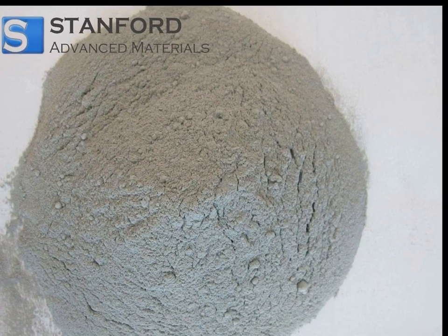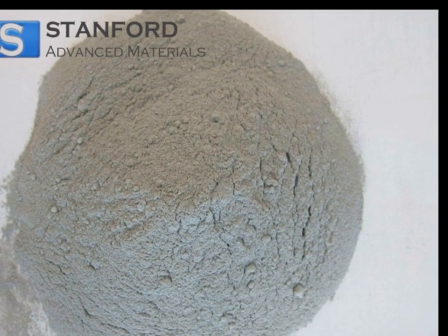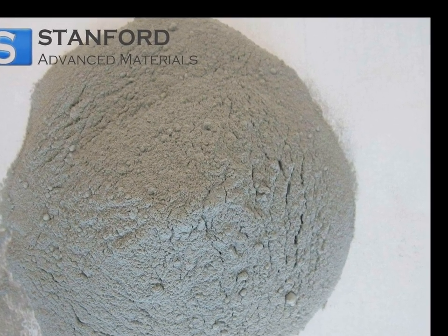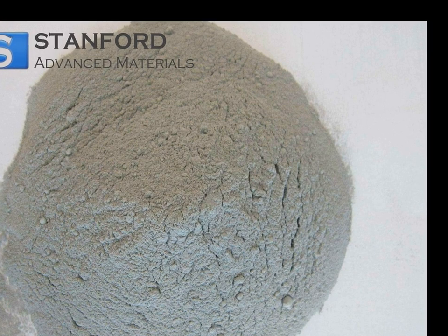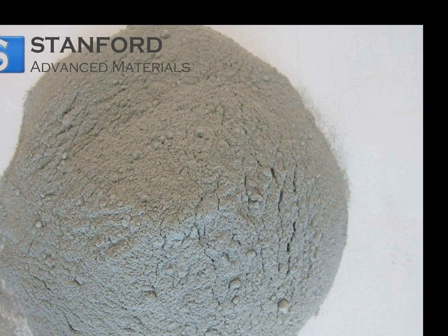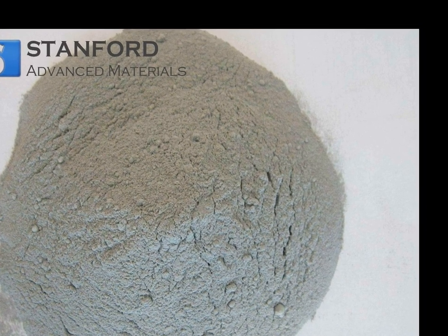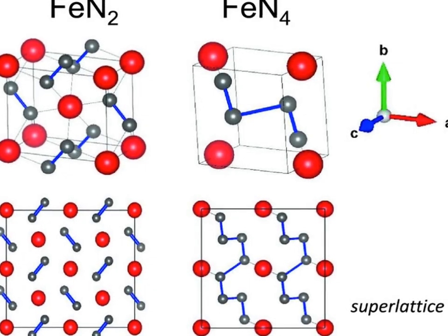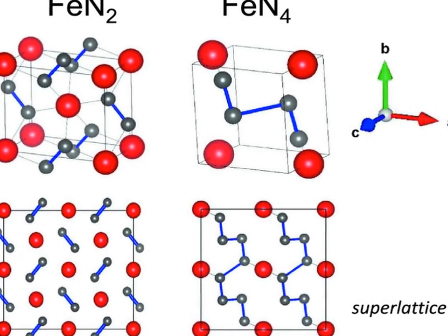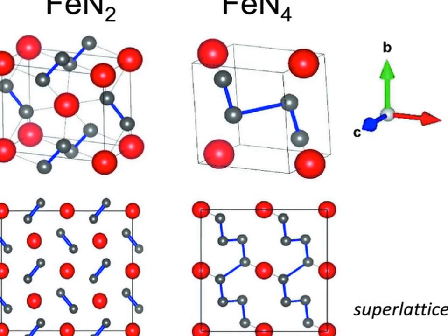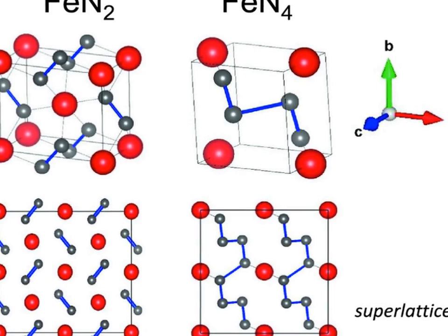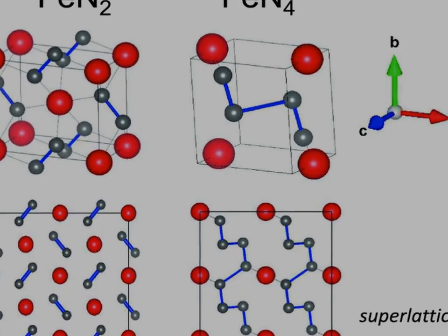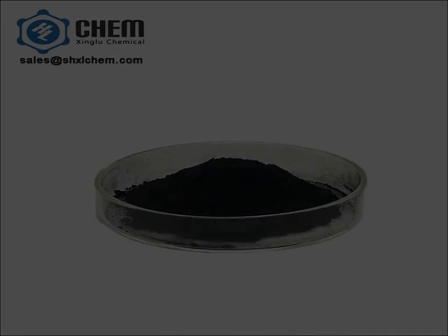Iron nitrides are a class of interstitial compounds composed primarily of iron, Fe, and nitrogen, N. These compounds are characterized by the insertion of nitrogen atoms into the interstitial sites of the iron lattice, significantly altering the physical, chemical, and magnetic properties of the base metal.